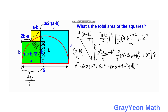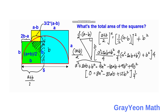Simplifying: moving a² to the right gives 0 on the left. For the ab terms: negative 18 minus 2 gives negative 20ab. For b²: 9 + 4 minus 1 = 12b². Dividing by 4 gives: 2a² minus 5ab plus 3b² equals 0. We now solve this resulting quadratic equation.